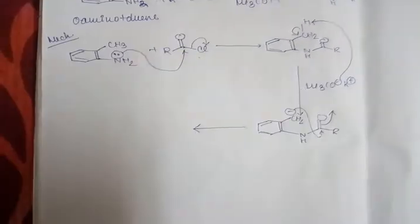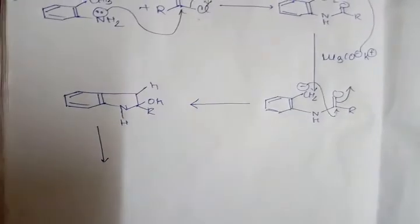It will react with the base, which will attack the terminal highly acidic hydrogen. A carbanion will form. This will then attack the carbonyl carbon and cyclization will occur.